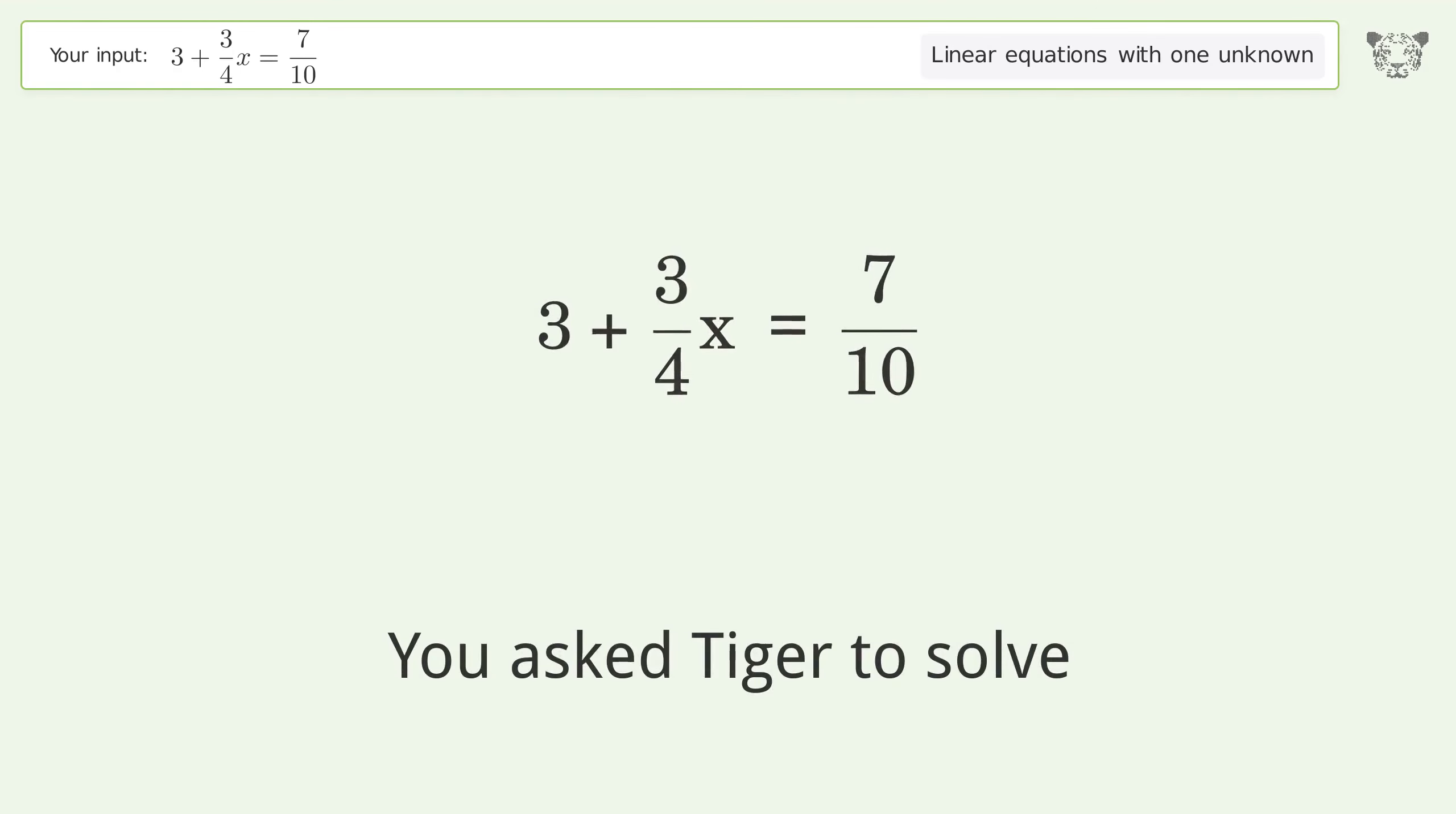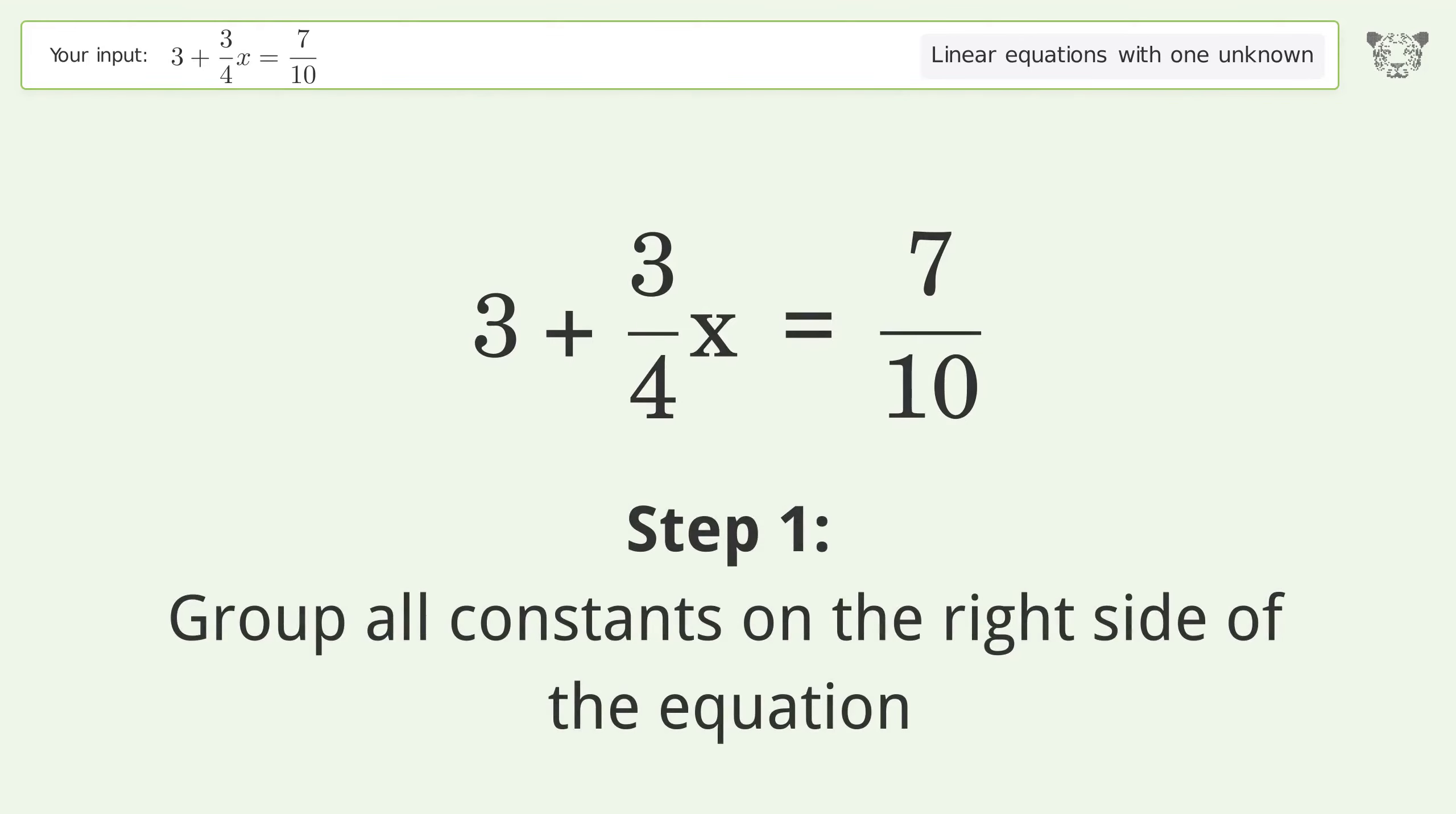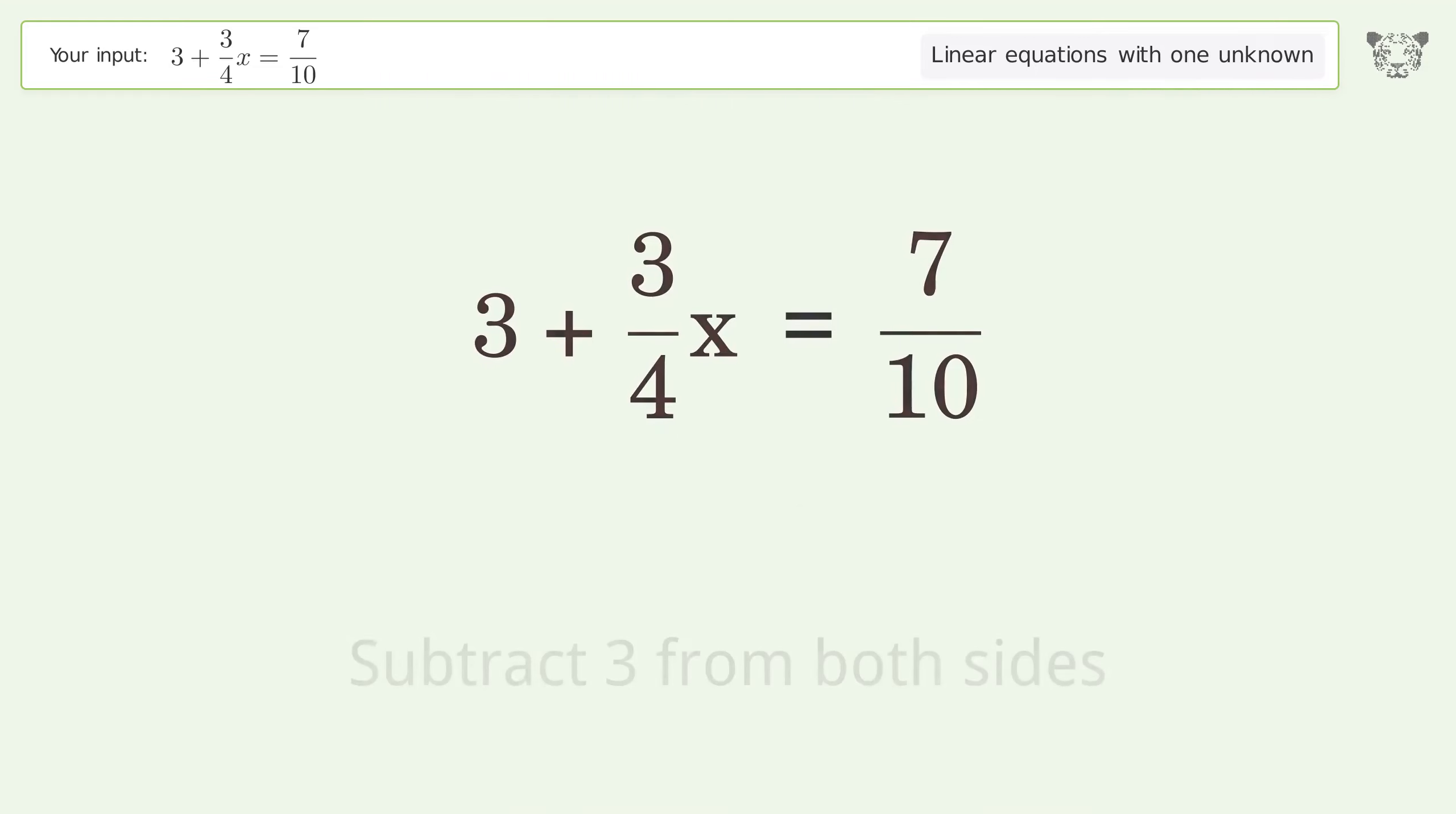You ask Tiger to solve this. It deals with linear equations with one unknown. The final result is x equals negative 46 over 15. Let's solve it step by step. Group all constants on the right side of the equation. Subtract